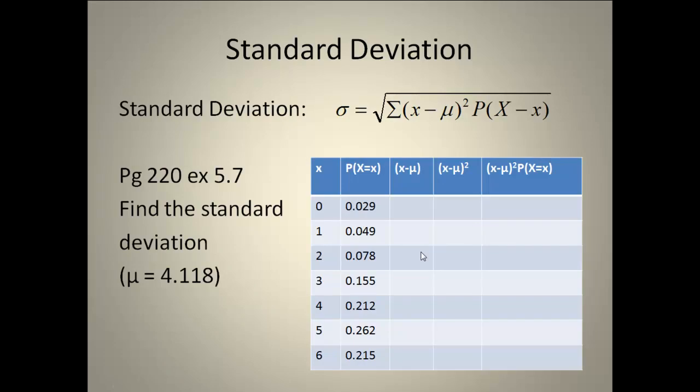Our standard deviation. We've got this nice formula here for standard deviation. Should look somewhat familiar. We've still got the square root. We've got our X minus μ squared, and we have to times it by our probability that X is equal to X. We're going to do example 5.7 on page 220. This time we're going to find the standard deviation for the bank tellers. What we first need to do is fill out our chart. I already filled in the X values. I filled in the probability that X equals X. Now we need to do the X minus μ.